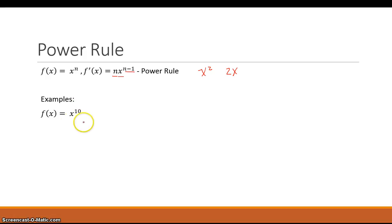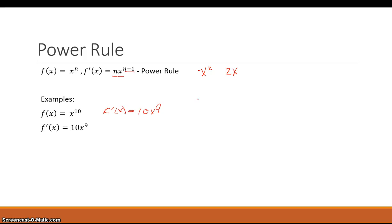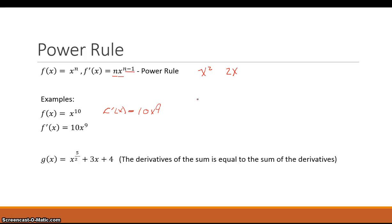Let's look at a couple of examples. If f(x) = x^10, then using the power rule, f'(x) is equal to the exponent brought down as a coefficient: 10 times x raised to the exponent minus 1, which is 10x^9. That is the derivative of x^10 using the power rule.